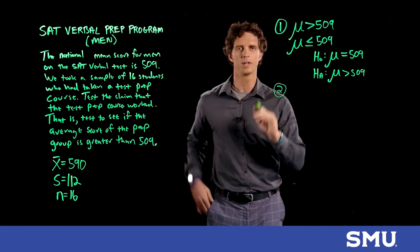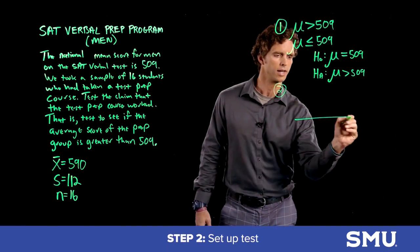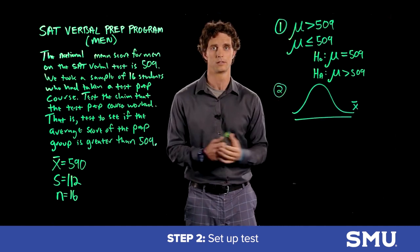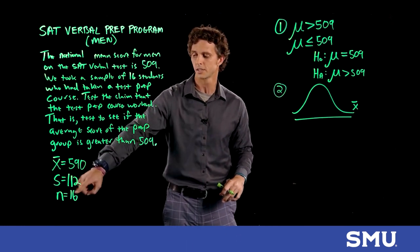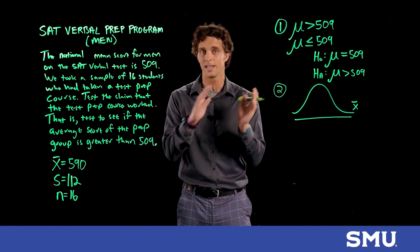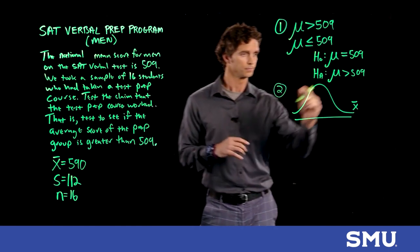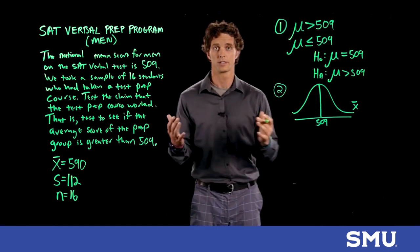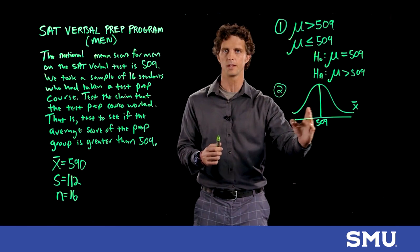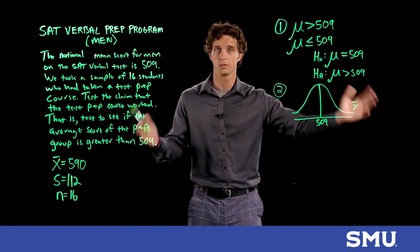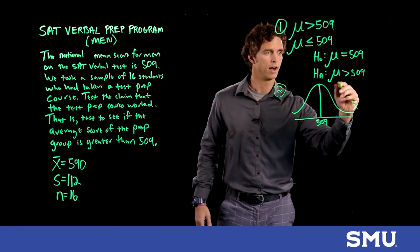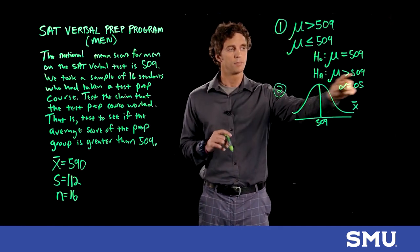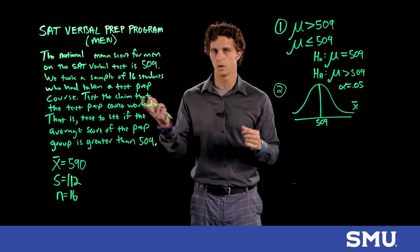Now we move to step two. We haven't looked at the data yet — in step two we set up our test. This is the distribution from the central limit theorem: the distribution of x-bars. We took a sample of 16; I want to know how much I can expect x-bar to move around. Under the null hypothesis we assume the mean is 509 and see if what we observed agrees with that or suggests the mean should be bigger than 509.